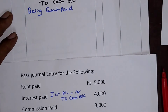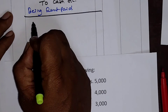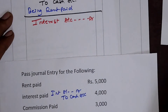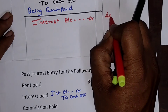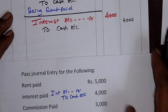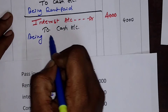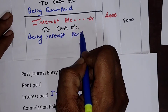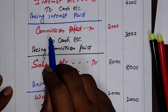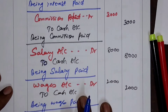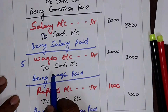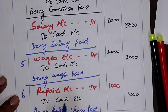Writing the second example in detail — interest paid rupees 4,000: Interest Account — Debit — 4,000, since interest is my expense, and cash is going out: To Cash Account — rupees 4,000. Narration: Being interest paid. The remaining entries: commission paid — Commission Account Debit to Cash Account rupees 3,000; salary paid — Salary Account Debit to Cash Account; wages paid — Wages Account Debit to Cash Account; repairs paid — Repairs Account Debit to Cash Account.